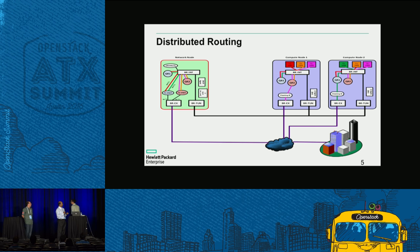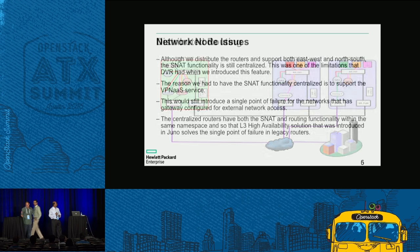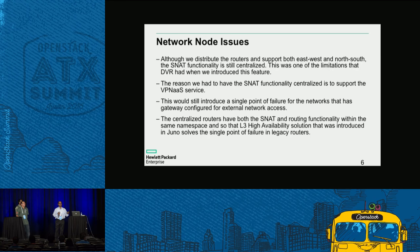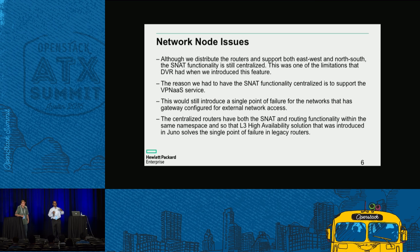One reason SNAT remained centralized is that VPN-as-a-Service is a singleton service that has to run in the SNAT node. It was running prior to Juno, and when DVR was introduced we didn't want to break that feature. So to support VPN-as-a-Service, SNAT was kept centralized.